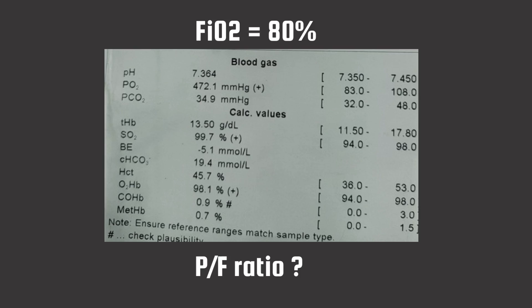Now, look at this report. This ABG is taken at an FiO2 of 80% and the patient is on mechanical ventilation. Derive the P/F ratio of the patient and consider how you will approach correcting this ABG in this scenario.